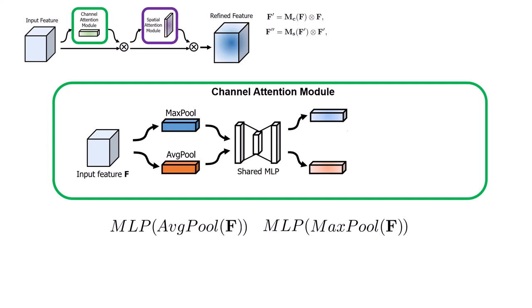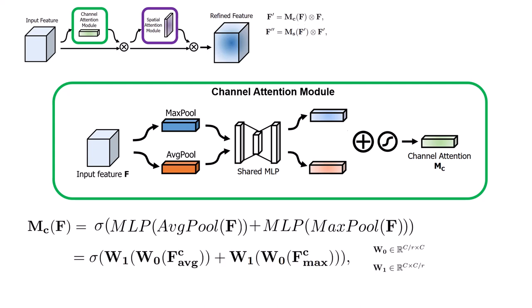But ultimately, we need one single vector to say that which channel is more informative than the other one. So we take their sum, and as usual, we pass them through a sigmoid nonlinear function, and we have our channel attention Mc. And regarding the shared MLP in the middle one, it's exactly like what we had in squeeze and excitation. We have two layers and one ReLU nonlinearity in between.